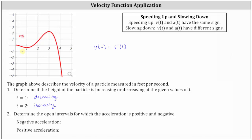Next, determine the open intervals for which the acceleration is positive and negative. Remember the acceleration function is equal to the derivative of the velocity function, which means where the velocity function is increasing the acceleration is positive, and where the velocity function is decreasing the acceleration function is negative.